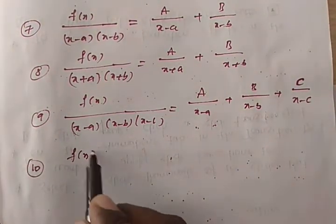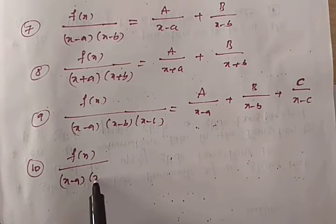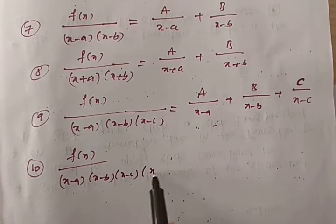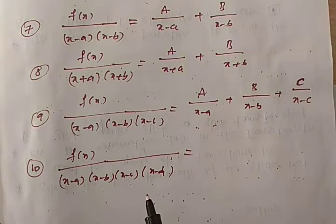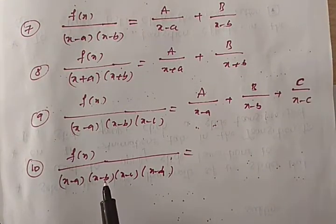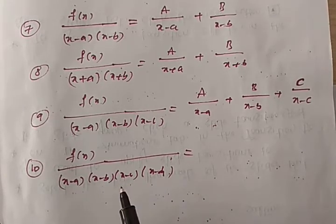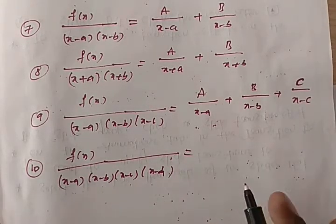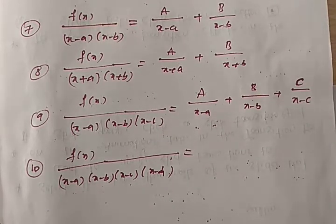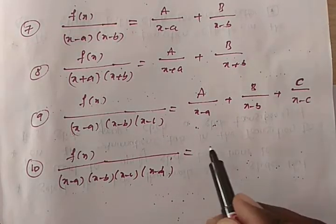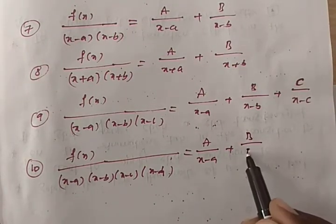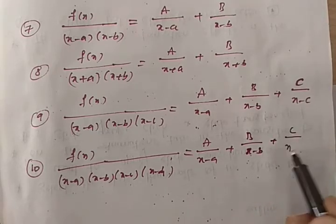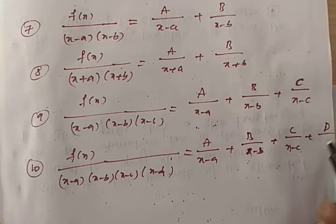Now consider f(x) divided by (x minus a)(x minus b)(x minus c)(x minus d). The denominator contains a product of four distinct linear factors — all are distinct. This is also Type 1. We decompose it as A by (x minus a) plus B by (x minus b) plus C by (x minus c) plus D by (x minus d).